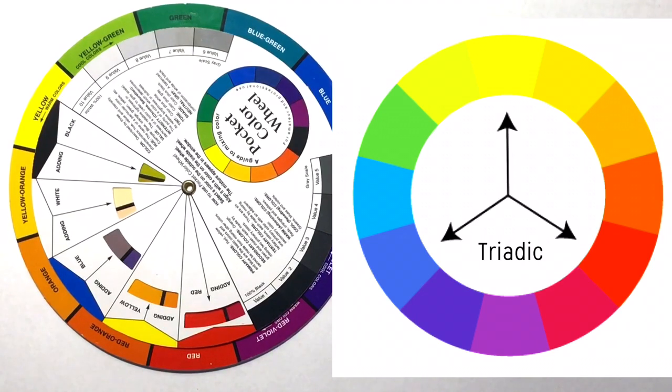Take for example yellow, blue, and red. They're completely different colors entirely, but they aren't as jarring and contrasting as opposing colors, so they work really well together.